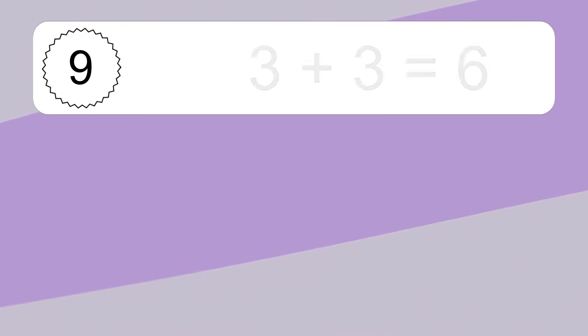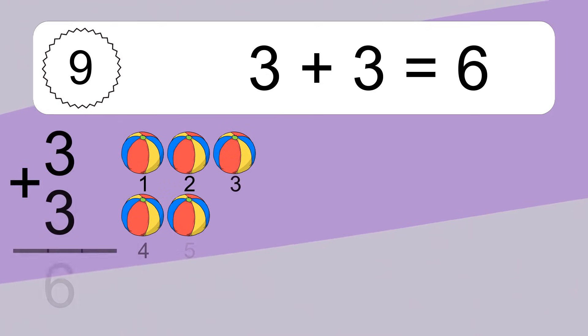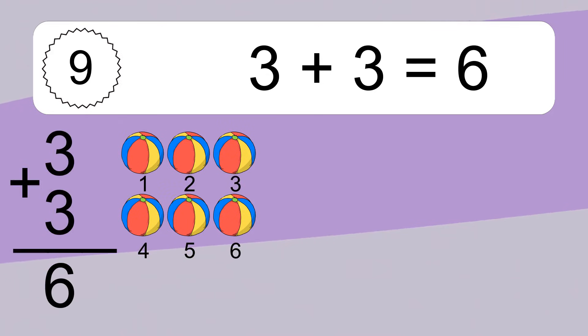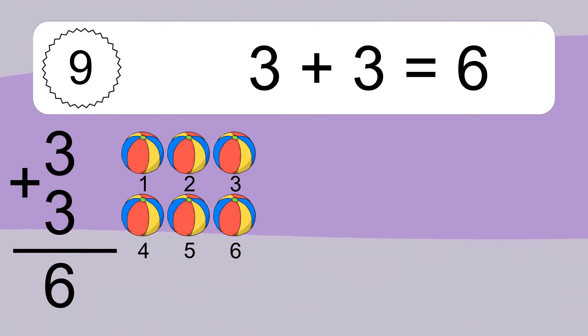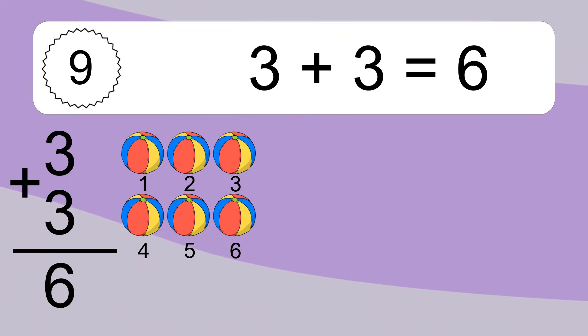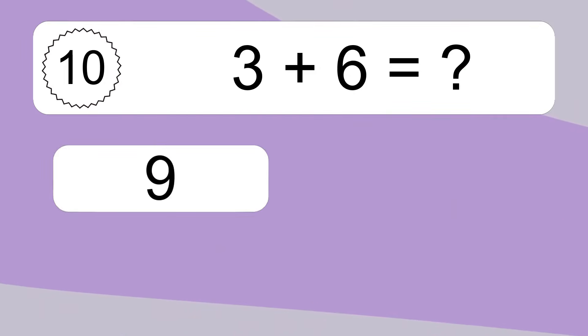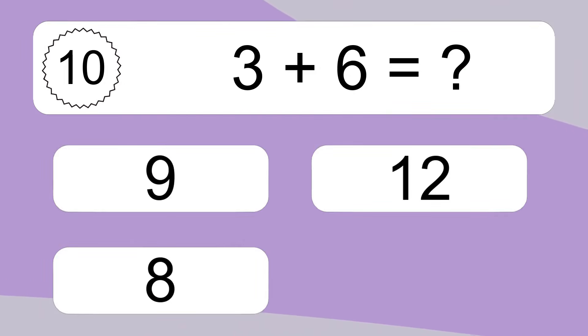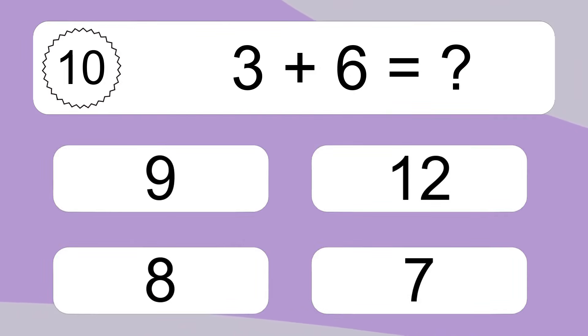Three plus three equals what? Three plus three equals six. Let's count it: one, two, three, four, five, six.